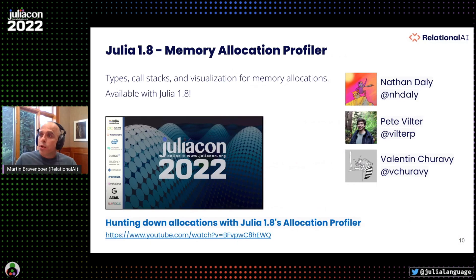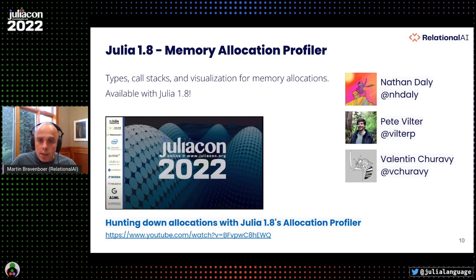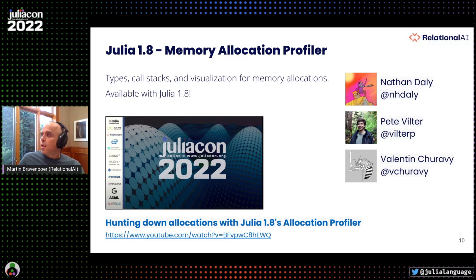Go check out the memory allocation profiler talk if you haven't seen it yet — it's really cool. What it can do is profile which types are being allocated and what the call stacks are; you can visualize them with pprof. It's available by default in Julia 1.8. Thanks also to Valentine for helping a lot with this, and Peter and Nathan from our side.